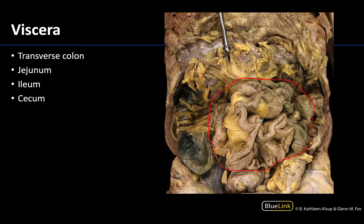The duodenum, which is the most proximal portion of the small intestine, is typically a little bit deeper, so we won't see it in this more superficial dissection. The jejunum is going to be more in the left upper quadrant, whereas the ileum is going to be more in the right lower quadrant and will extend into some of the other regions. We cannot grossly see where the jejunum transitions into the ileum, but the jejunum would be identified in the left upper quadrant, and the ileum closer to the cecum in the right lower quadrant.